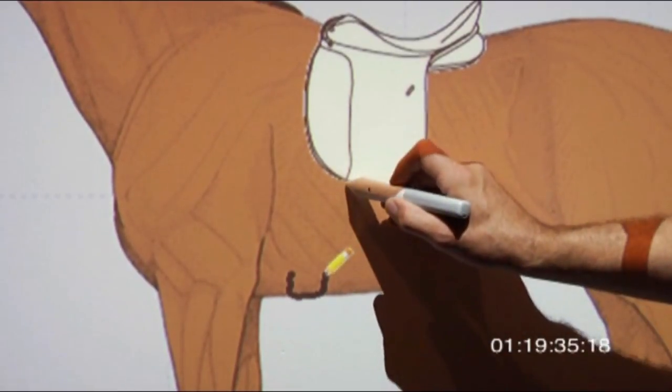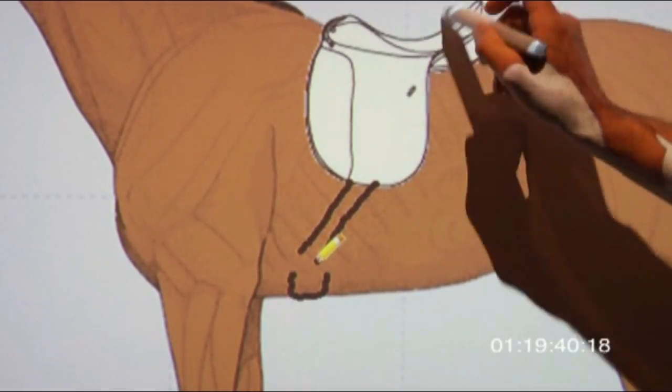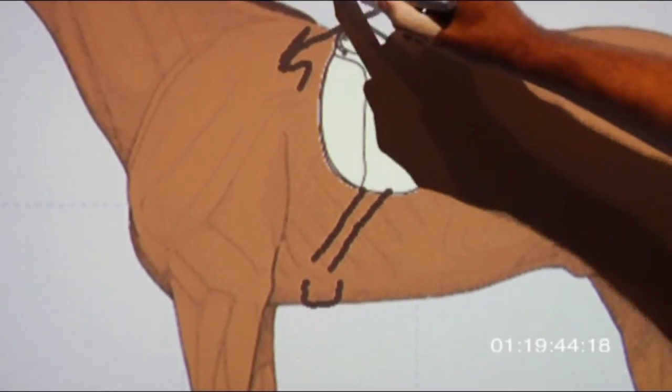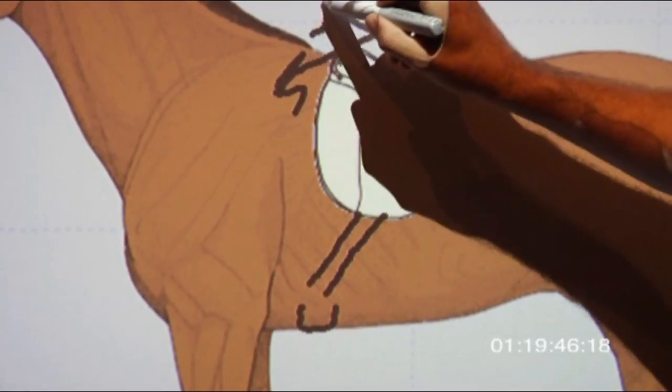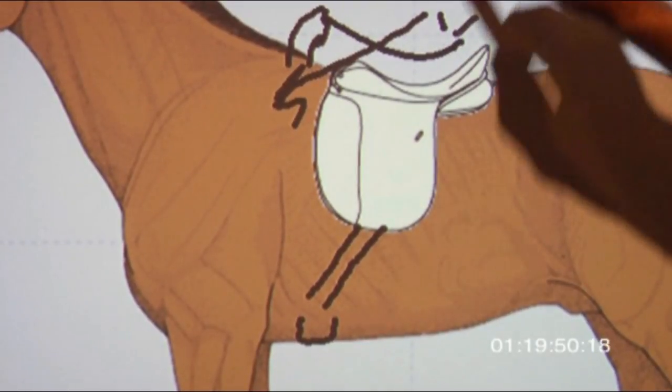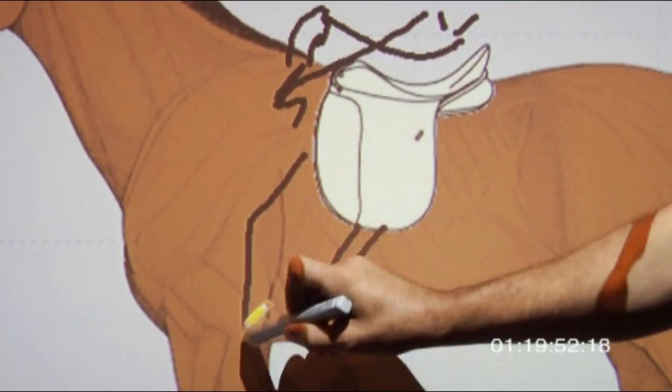and I pull the billets forward, this will drive the saddle into the shoulder, make the saddle sit too high on the horse, and the rider will lean back and the leg will come forward into a chair seat.